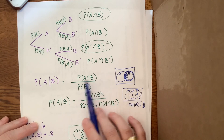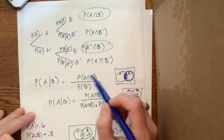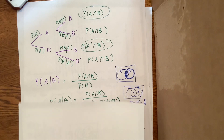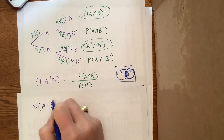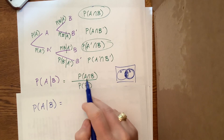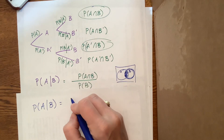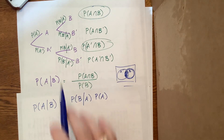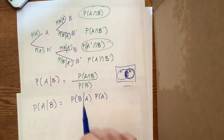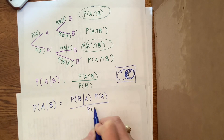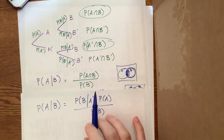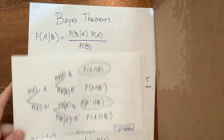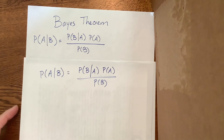Looking back at the tree diagram, the probability of A intersect B came from the probability of B given A times the probability of A. So the probability of A given B equals the probability of B given A times the probability of A, all divided by the probability of B. Do you see how those two match?